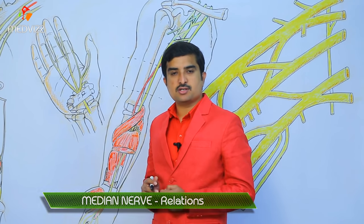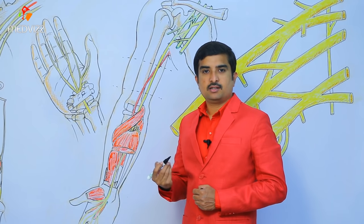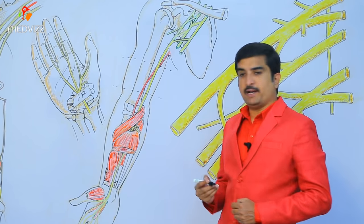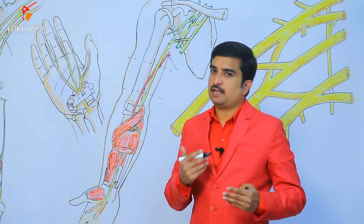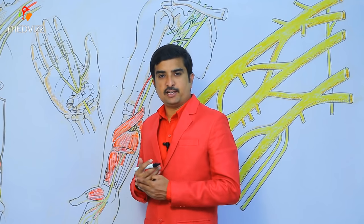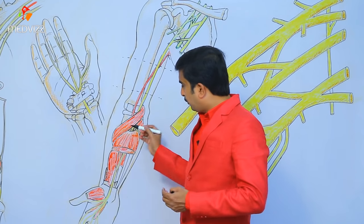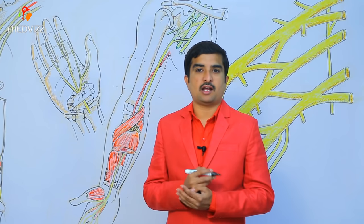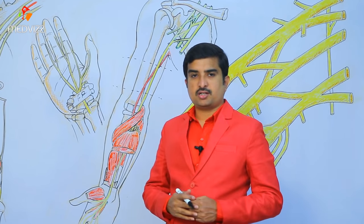Regarding relations of the median nerve: in the proximal arm it is lateral to the brachial artery; in mid-arm it crosses to the medial side. In the cubital fossa, it lies medial to the brachial artery, posterior to the bicipital aponeurosis, and anterior to the brachialis muscle. It is separated from the ulnar artery by the deep head of pronator teres.